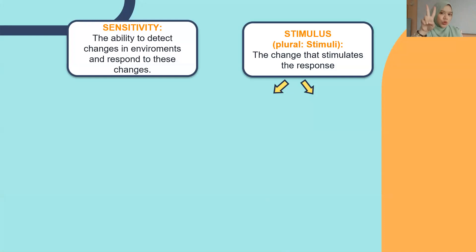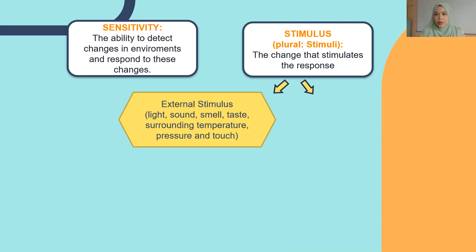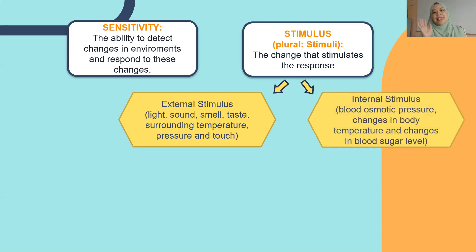For stimulus, there are two types. First of all, the external stimulus — from outside — for example, light, sound, temperature, pressure, and touch. So all that is considered under external stimulus. And the second one is internal stimulus, which is inside our human body — for example, the blood osmotic pressure, changes in blood temperature, and also changes in the blood sugar level.